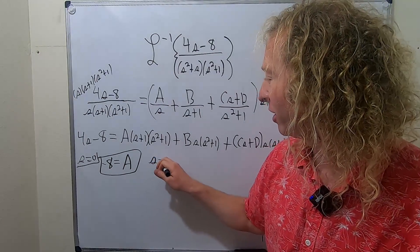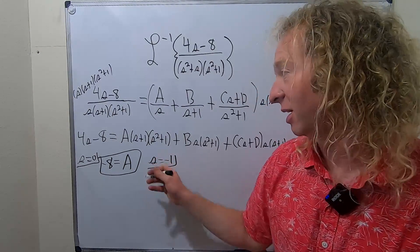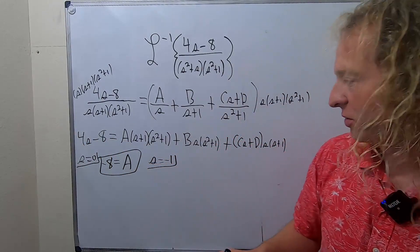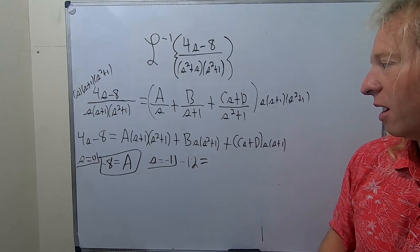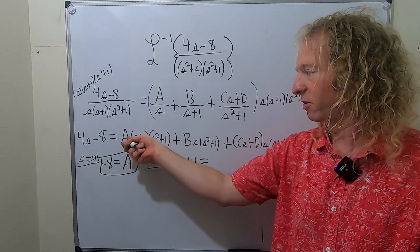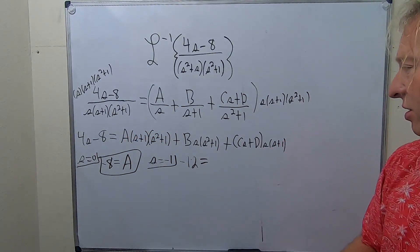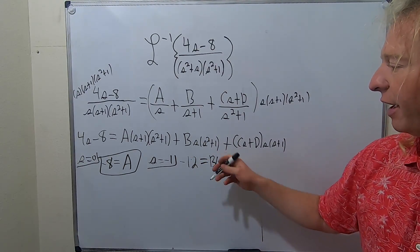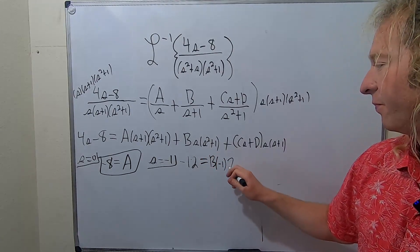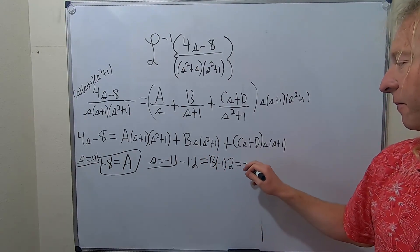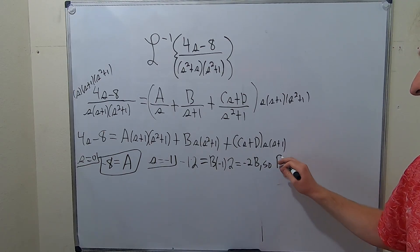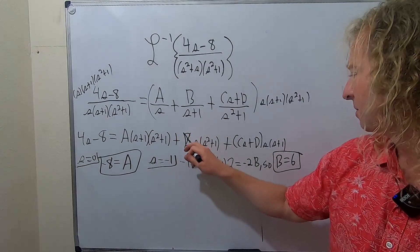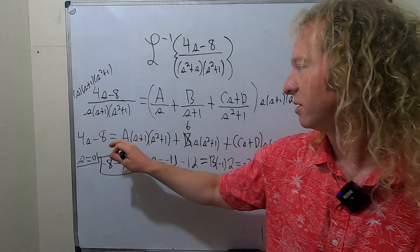Let's do negative 1 now. Plugging in s equals negative 1, we get negative 4 minus 8, so that's negative 12. The A term goes away because negative 1 plus 1 is zero. The Cs plus D term goes away too. So we just get B times negative 1 times negative 1 squared plus 1, which is negative 2B. So negative 12 equals negative 2B, meaning B equals 6.